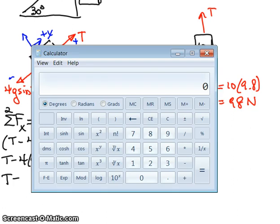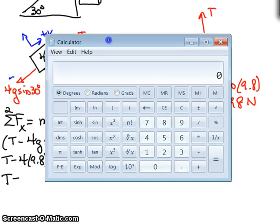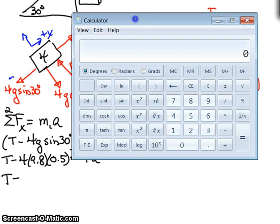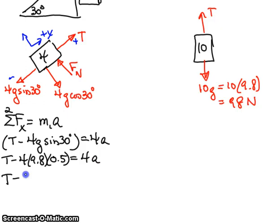And this becomes T minus, let's calculate that. We got 4 times 9.8 times 0.5. And so that becomes 19.6 equals 4a.